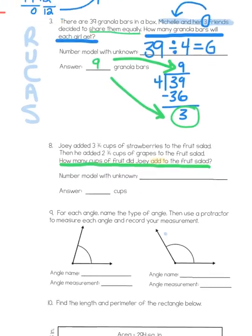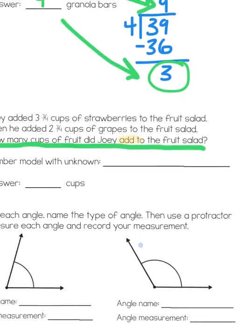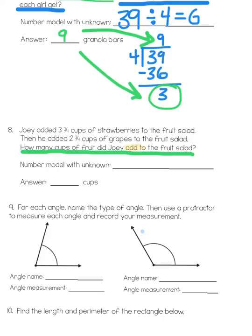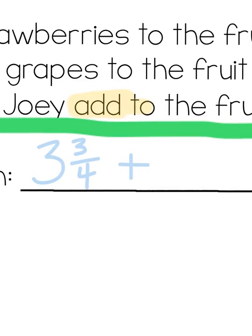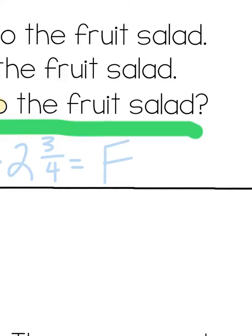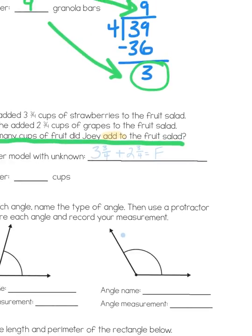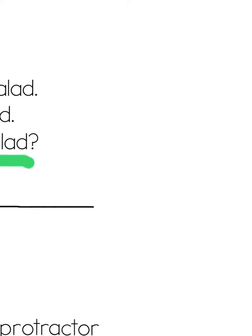So, we need to create an addition problem. Now, I'm going to write it side by side to start and then I'm going to write it vertically to solve. So, it's going to be 3 and 3 fourths plus 2 and 3 fourths equals we'll say F for fruit salad. There's my number model with the unknown. Now, I need to solve it and to solve it, what you're going to want to do is write those same two fractional amounts, but you're going to write them vertically. 3 and 3 fourths plus 2 and 3 fourths.